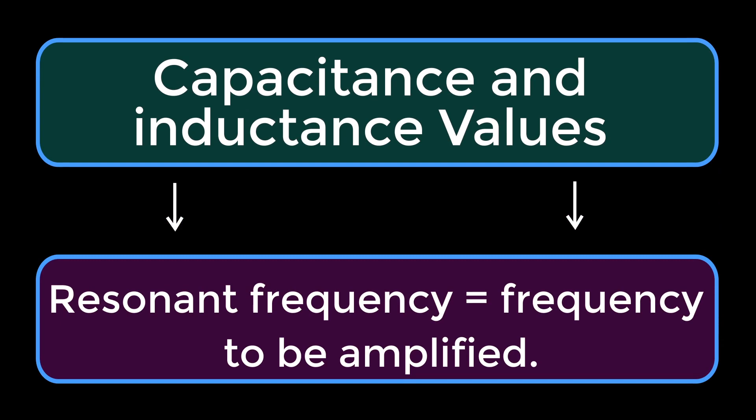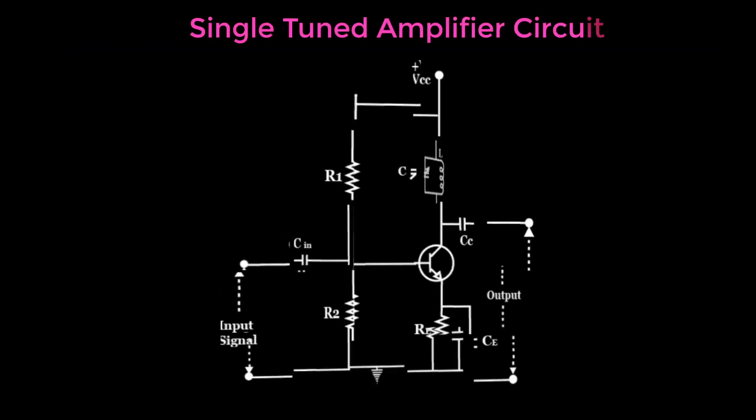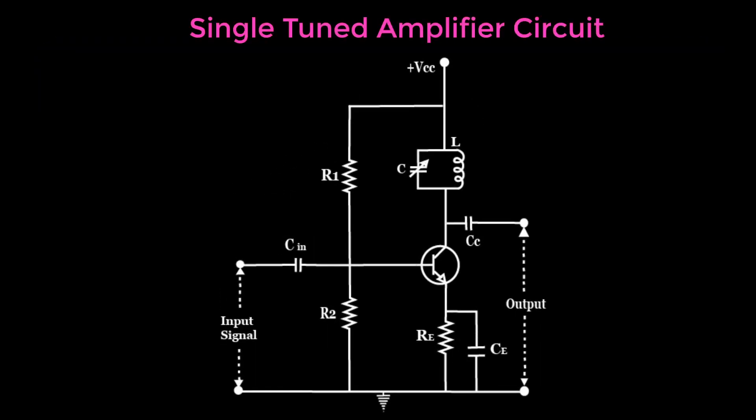The values of capacitance and inductance of the tuned circuit are selected such that its resonant frequency is equal to the frequency to be amplified. The following circuit diagram shows a single tuned amplifier circuit.